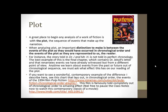The first thing I want to talk about is plot. A great place to begin any analysis of a work of fiction is with the plot — the sequence of events that make up the narration. An important distinction to make is between the events of the plot as they would have occurred in chronological order and the events of the plot as they are represented to us, the reader. The story told in Dr. Jekyll and Mr. Hyde is not told in perfect chronology. The best example is the final chapter, which contains Dr. Jekyll's letter and re-narrates events we have already witnessed — we go back in time to re-experience certain events from his perspective. Anytime we learn about events out of chronological sequence — flash forwards, flashbacks, things told out of order — we must ask what effect this has on our reading of the plot.